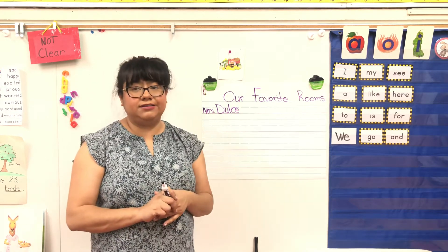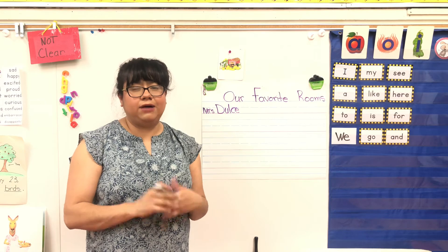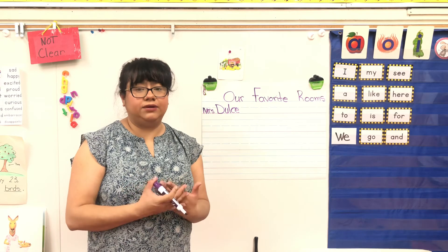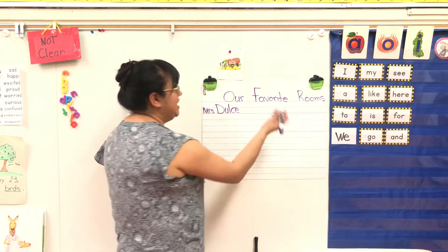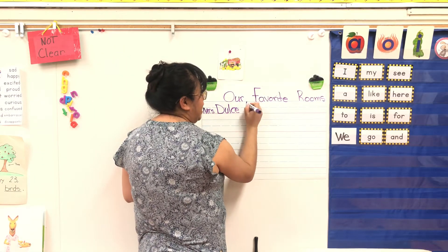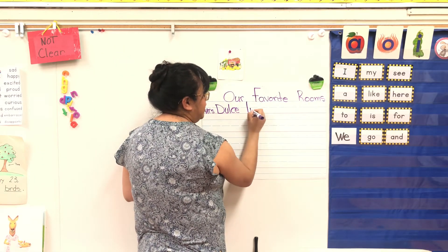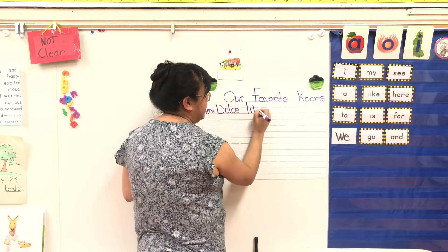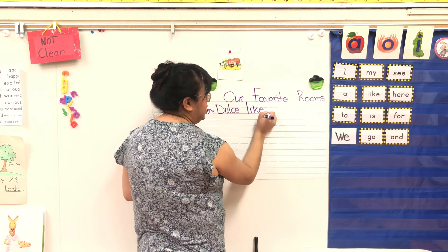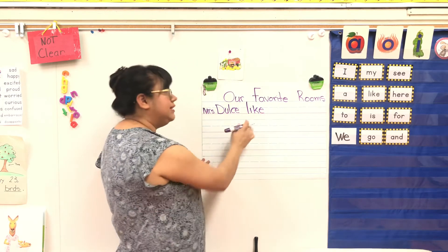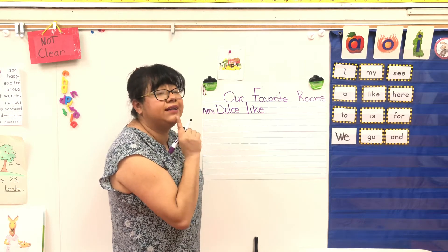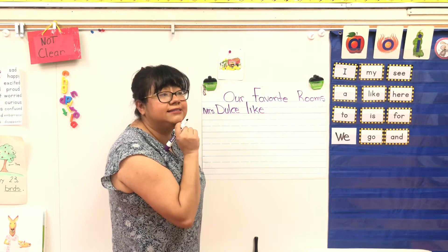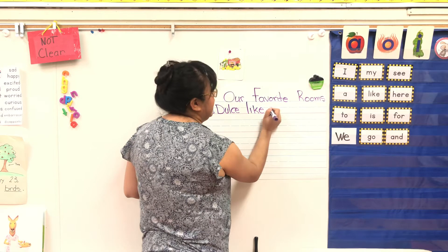Miss Dulce, how do you go ahead and spell the word 'like'? How would you do that? Who remembers? Go ahead and spell it with me. Are you ready? L-I-K-E. That's 'like.' But what if I want to say 'likes'? What do you hear at the end? Ss. Very good. Likes.